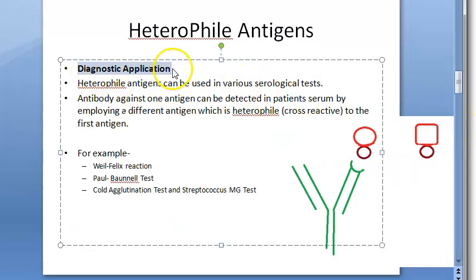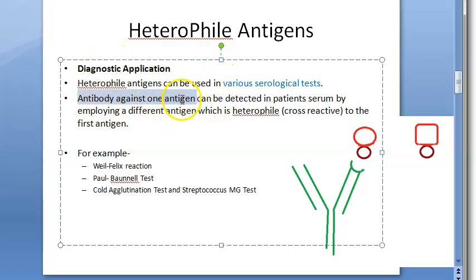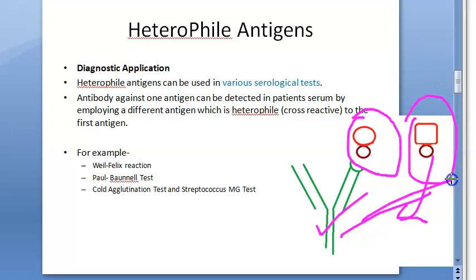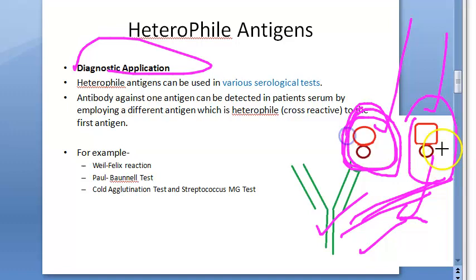Heterophile antigens can be used in various serological tests — tests in which you detect antibody or antigen. An antibody against one antigen can be detected in patient serum by employing a different antigen which is a heterophile antigen. If a person is infected with one antigen and has made antibodies, you take his serum and add a few drops of the heterophile antigen — there will be agglutination. This is the diagnostic application of heterophile antigens.